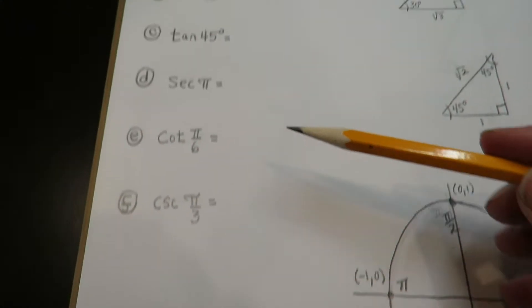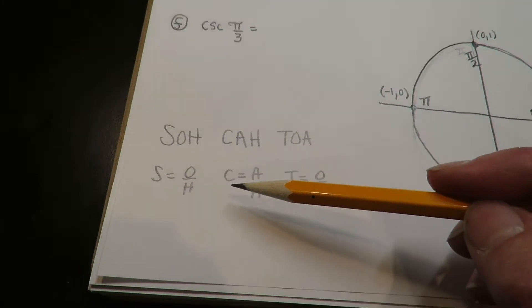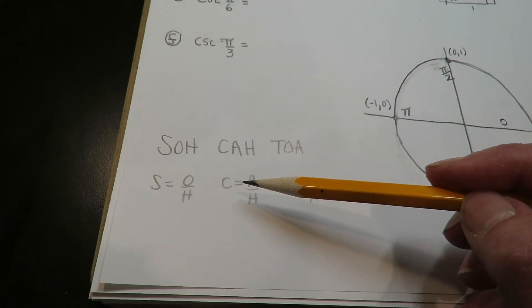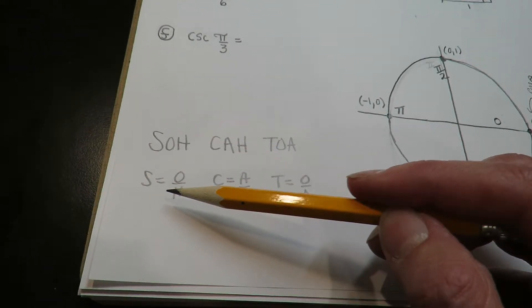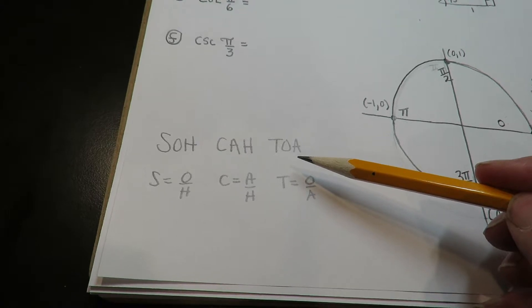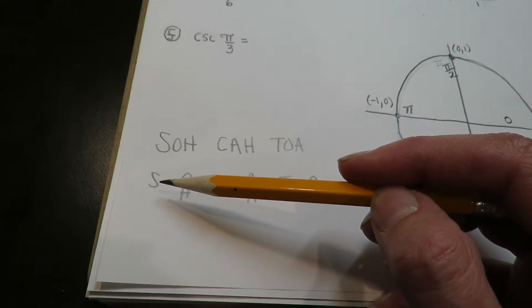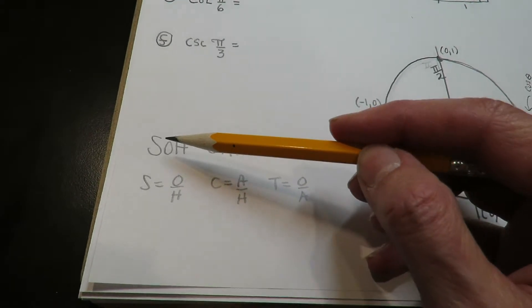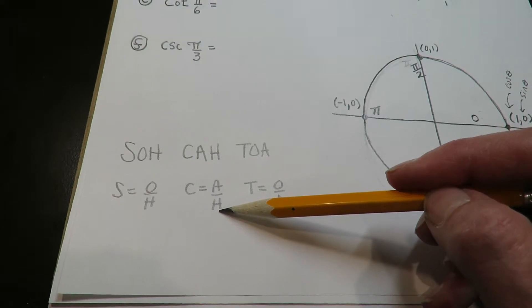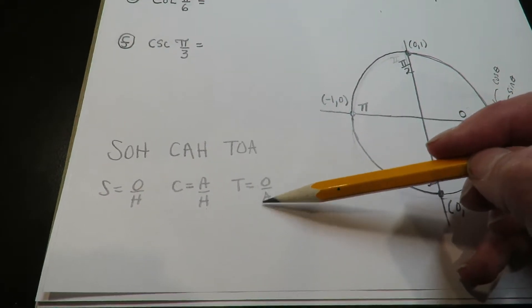The other thing we'll look at is the six trig functions and their relationships to the sides of the triangle. SOHCAHTOA is a nice mnemonic to remember the relationship between the angles and the sides. The sine is the opposite over the hypotenuse — that's where you get the SOH. The cosine is the adjacent over the hypotenuse. The TOA is the opposite over the adjacent.